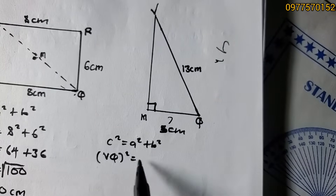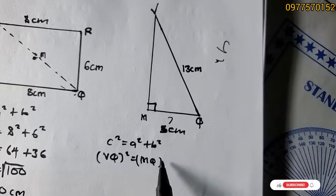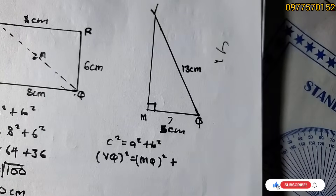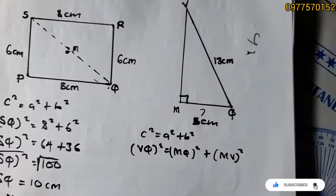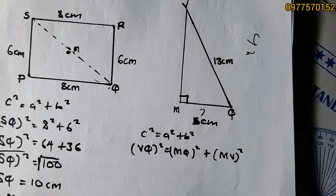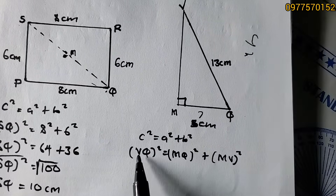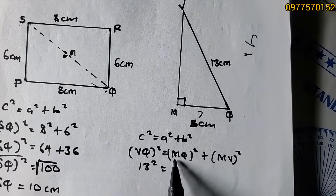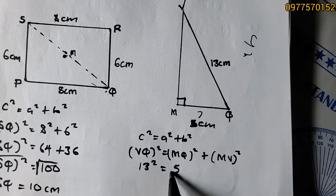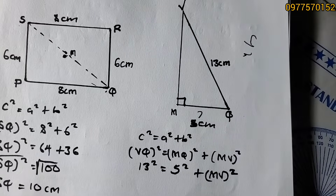Setting up the equation: VQ² = MQ² + MV². VQ is the slant height equal to 13, and MQ is 5. So substituting: 13² = 5² + MV². Remember to square each term.